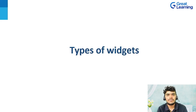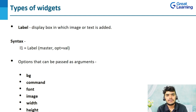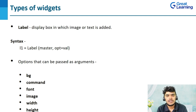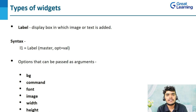The first widget is the label. Label is used to display a box in which text or image is added. The syntax is: Label(master, options). Master is the main window. Options can include BG (background), command, font, image, width, and height. BG sets the background color — for example, blue gives a blue background. FG stands for foreground color; if set to red, the text will appear red.